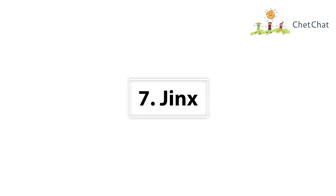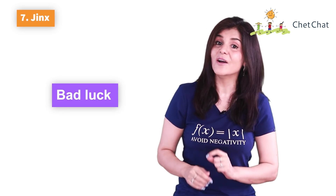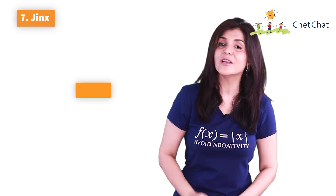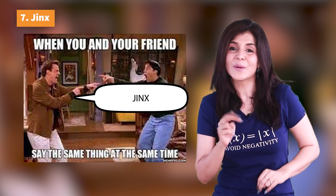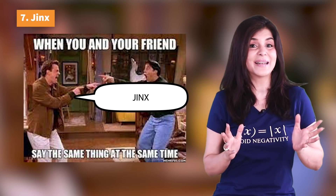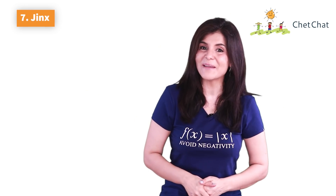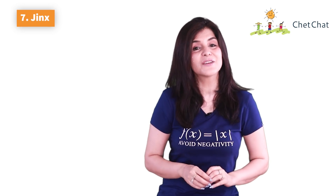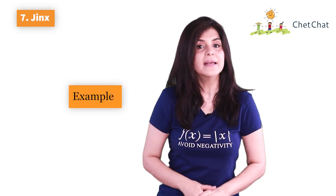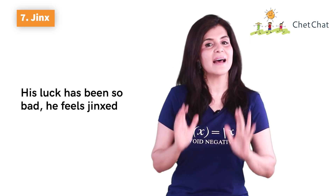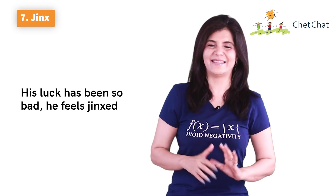By the way, a tranquilizer is a drug that has a calming and sedative effect on a person. Word number seven is 'jinx.' A jinx means bad luck, or a person or thing believed to bring bad luck. For example: 'Someone put a jinx on this car — it's always giving me trouble.' Have you noticed how when two people say the same thing at the exact same time, one of them quickly says 'jinx' to the other? Jinx can be traced back to the 17th century when the word 'jing' was used to mean a spell. Example: 'The injury jinx has struck the cricket team.' You can also use the verb form: 'His luck has been so bad, he feels jinxed.'